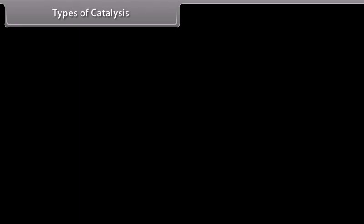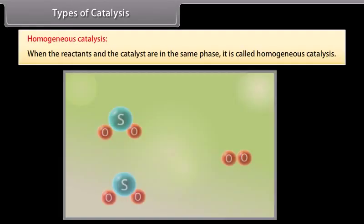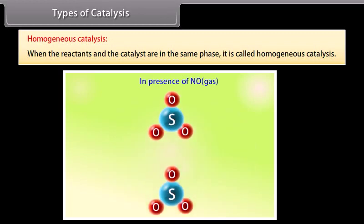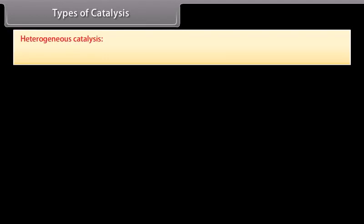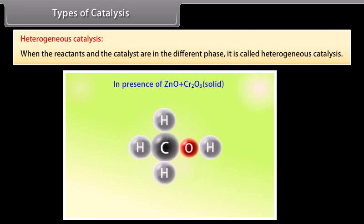Catalysis reactions are of two types: homogeneous and heterogeneous catalysis. In homogeneous catalysis, reactants and catalyst are in the same phase — for example, oxidation of sulfur dioxide to sulfur trioxide in the presence of nitric oxide in the lead chamber process, where SO₂, O₂, and the catalyst nitrous oxide are all in the gaseous phase. In heterogeneous catalysis, reactants and catalyst are in different phases — for example, manufacture of methanol from CO and H₂ using ZnO + Cr₂O₃ as catalyst, where reactants are gaseous and the catalyst is solid.